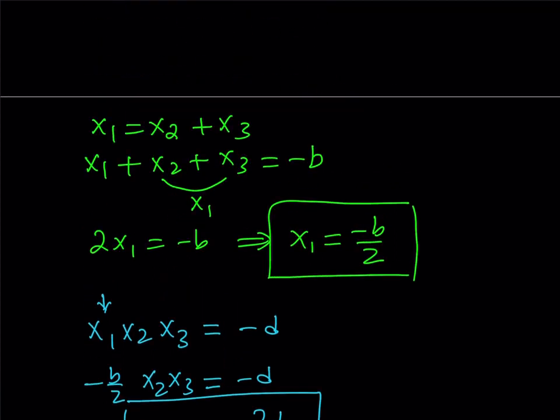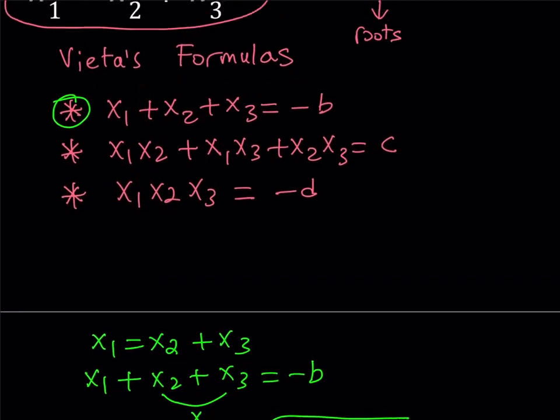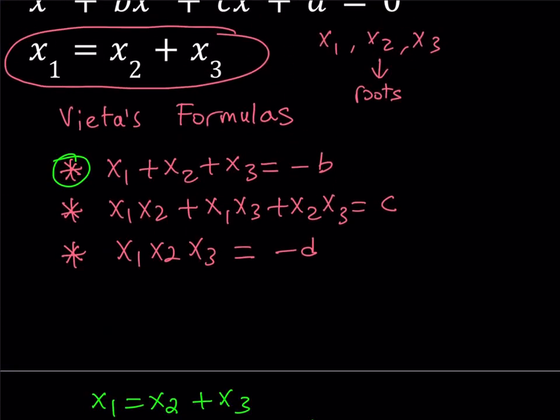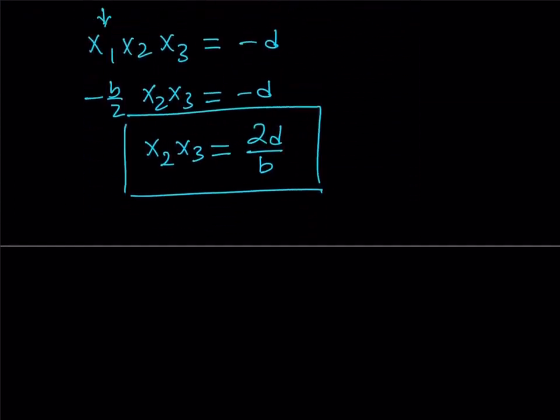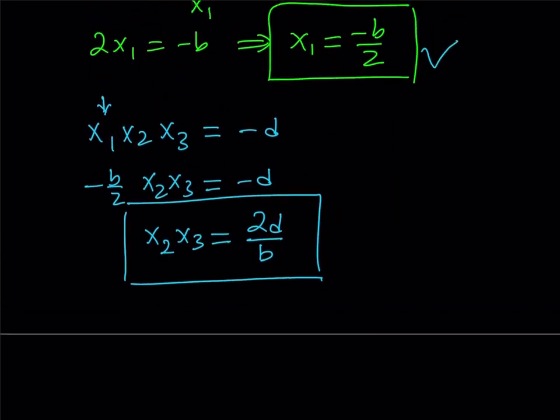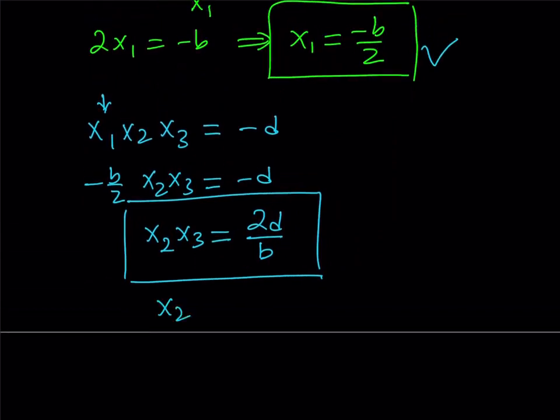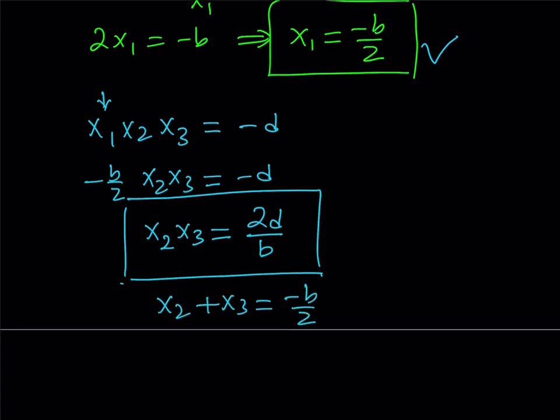Why? Because remember, the given condition was x1 equals x2 plus x3. So, since we already found x1, which means we also found x2 plus x3. Okay, so since x1 is equal to this, that implies x2 plus x3 is also equal to negative b over 2. Great.